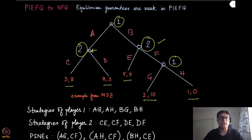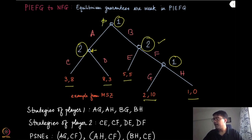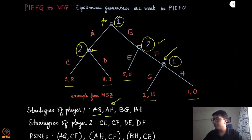Now, what are the strategies as we have defined in the previous module for the extensive form game? It is the complete contingency plan — what player one can do at every possible non-terminal history of the game where this player is playing. Player one plays at the origin and also at this history which is BF. So at these two points it can take actions like A or G, and a strategy of player one could be written as AG — meaning at the first history it is choosing action A.